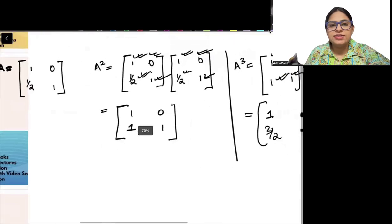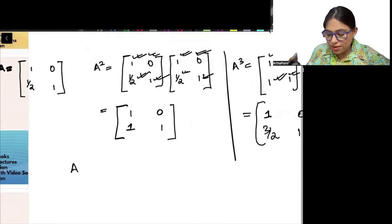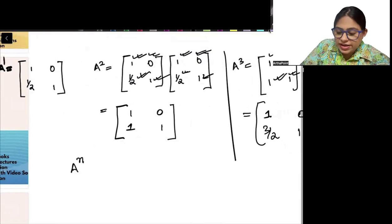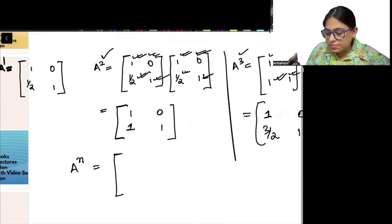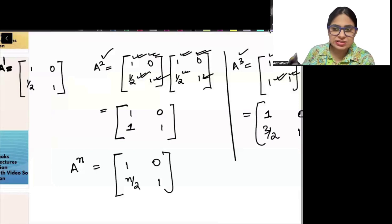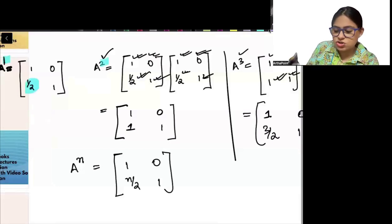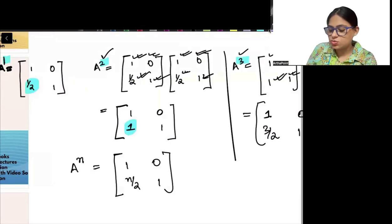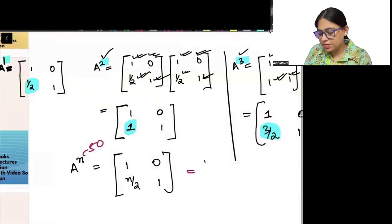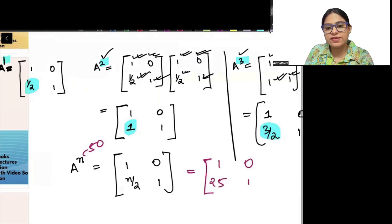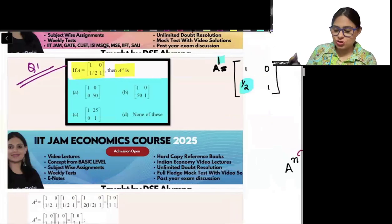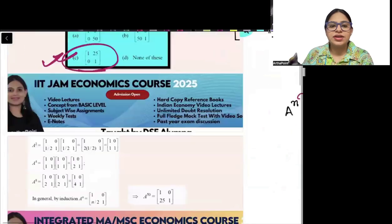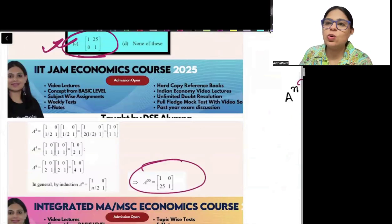Can you see the pattern? A to the power N = [[1, 0], [N/2, 1]]. For power 1 the off-diagonal is 1/2, for power 2 it is 1 = 2/2, for power 3 it is 3/2. So when the power is 50, we get [[1, 0], [25, 1]]. That is the correct answer — 1, 0, 25, 1.